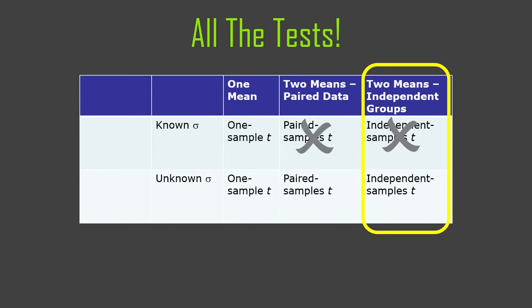We're looking right now at two means from independent groups. There's really only one option here — it's the independent samples t-test, because we're not going to do z for this.